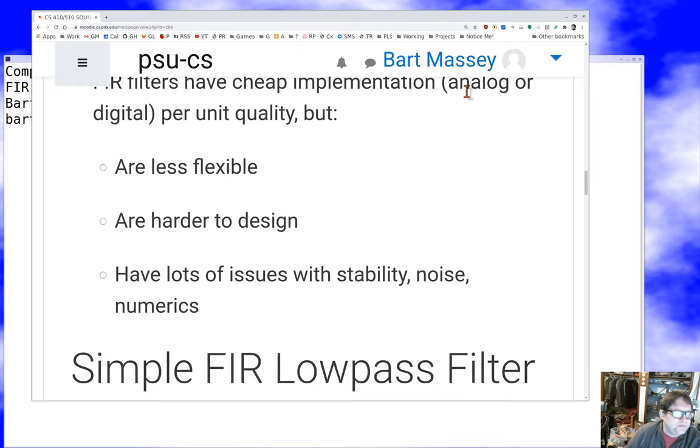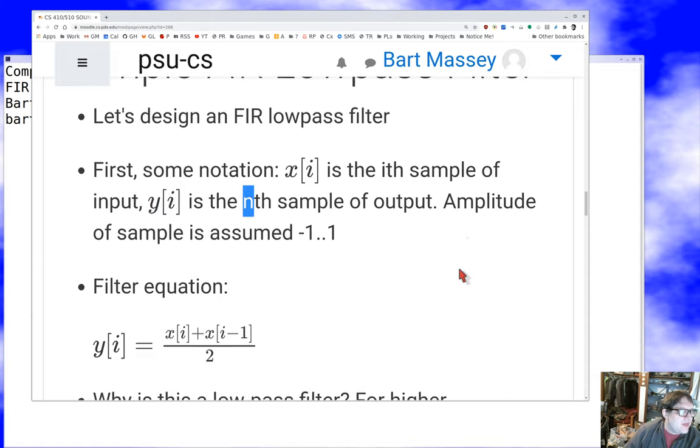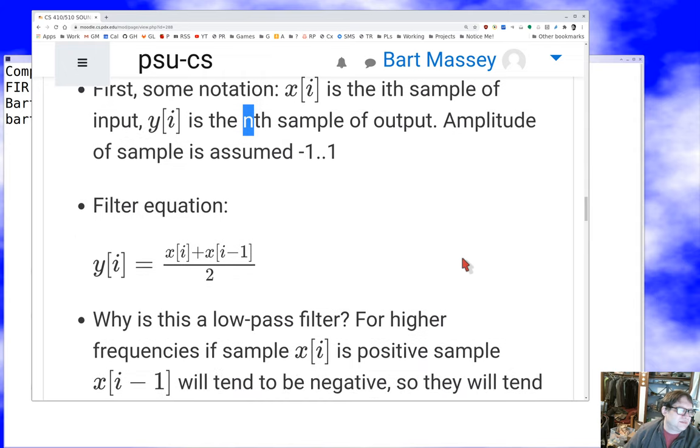In digital, we mostly don't use IIR filters even though they can be really nice. We mostly use FIR filters, and that's what we're going to talk about for the rest of this talk. So let's build a really dumb FIR low-pass filter just to see how it's done. First, some notation: X sub i is the i-th sample input.